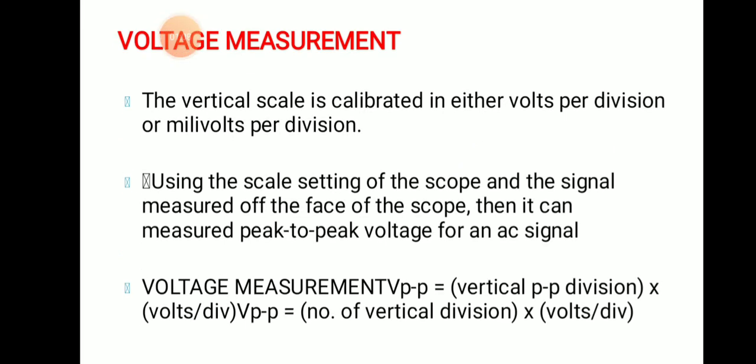Voltage measurement can also be called amplitude measurement. In order to measure the voltage from the CRT display, one must observe the vertical attenuator expressed in volts per division and the number of divisions of the beam. The peak-to-peak value is calculated as: voltage peak-to-peak equals volts per division multiplied by number of divisions.